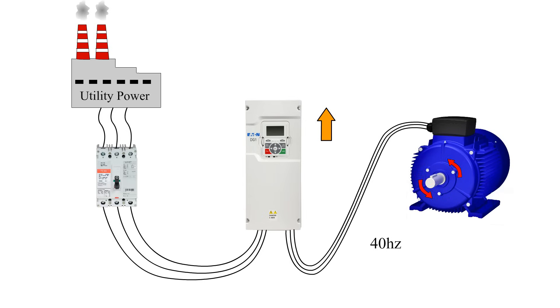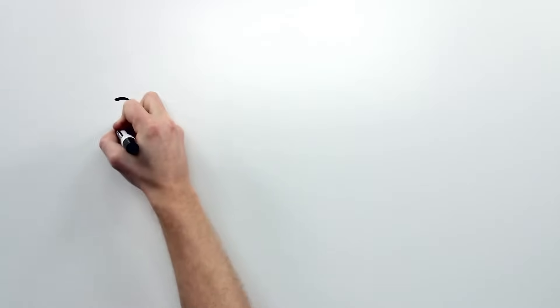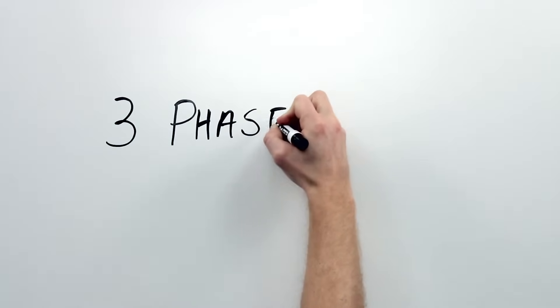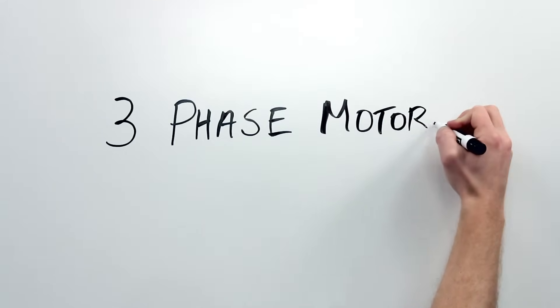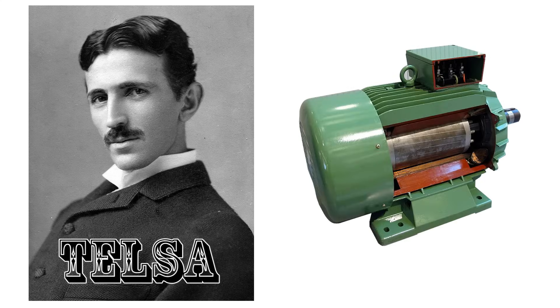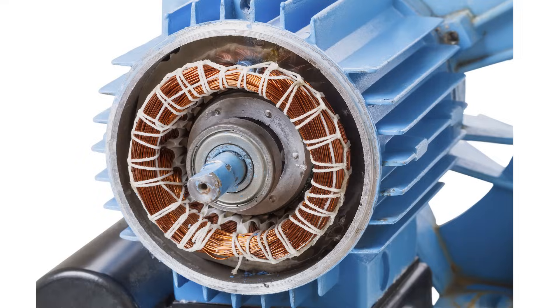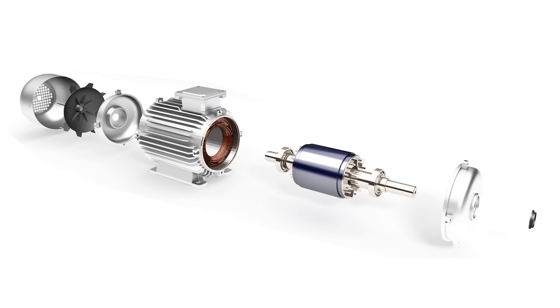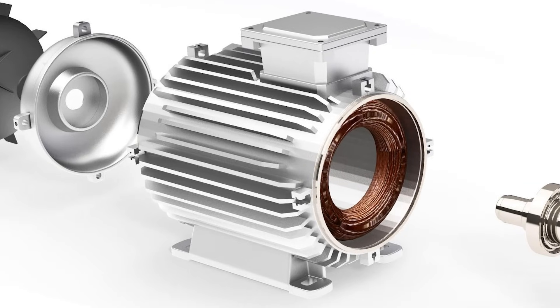In order to better understand how this works, it will help to understand how the frequency of the power affects a three-phase motor. Back in the late 1800s, a sharply dressed Serbian named Nikola Tesla invented the three-phase AC motor. In his design, there are two main parts: the stator and the rotor. The stator is the portion around the outside of the motor, made of lots of windings of thin copper wire. With a three-phase motor, there are windings specifically powered by the A phase, windings for the B phase, and windings for the C phase.